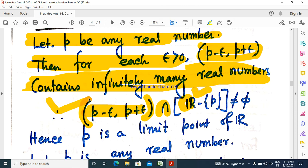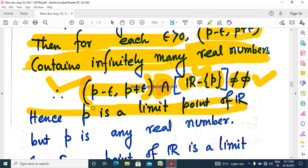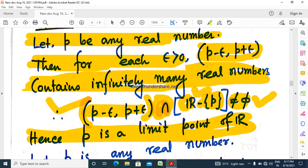(p - epsilon, p + epsilon) contains infinitely many real numbers. Their intersection produces an infinite collection. The intersection (p - epsilon, p + epsilon) ∩ [R - {p}] is not empty, and p is a limit point of R.